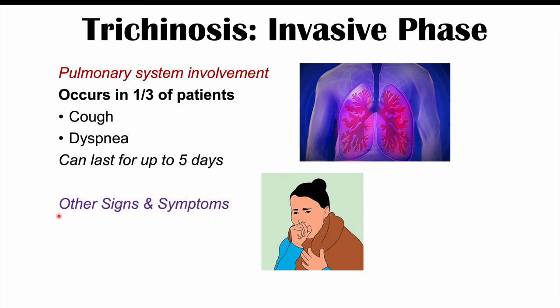To treat trichinosis, albendazole or mebendazole are the anti-helminthic treatments used. Albendazole is given at roughly 5 mg per kg per day for 7 days, and is especially effective early in the course of disease, particularly within the first 3 to 7 days.